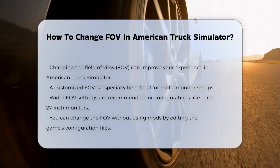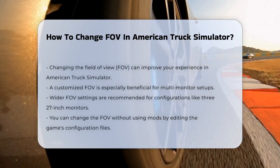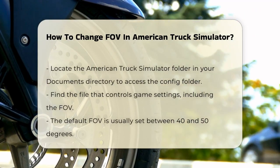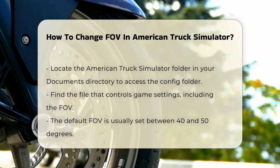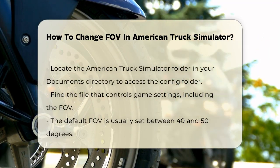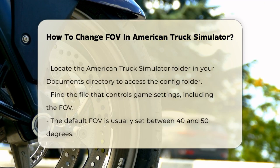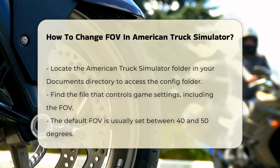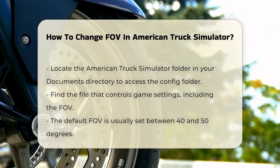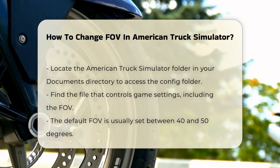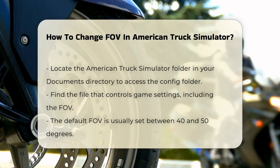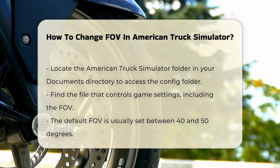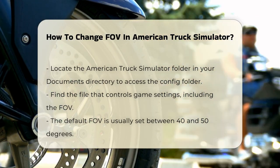To change the FOV, you don't necessarily need to install mods, although mods can be helpful. Here's a method that works without mods: you'll need to edit the game's configuration files. Start by opening your Documents folder, then navigate to the American Truck Simulator folder, and open the Config folder. Inside, you'll find a file that controls the game's settings including the FOV. Look for the line that sets the FOV, which is usually set to a default value like 40 or 50 degrees.